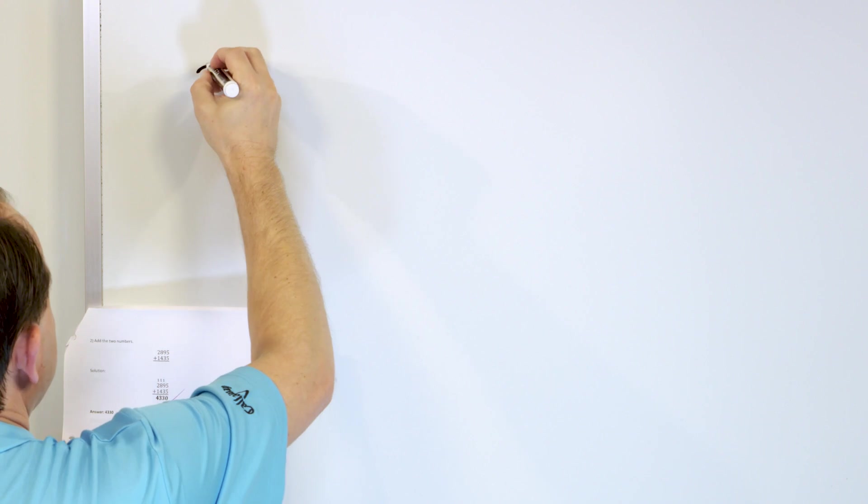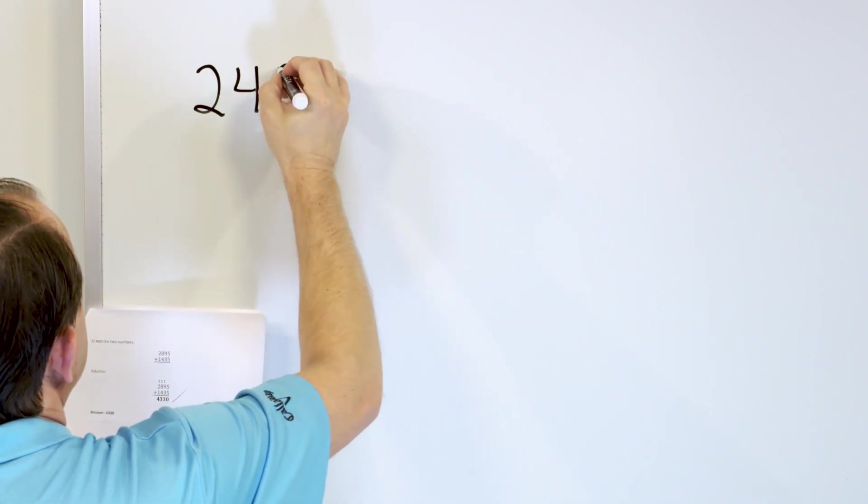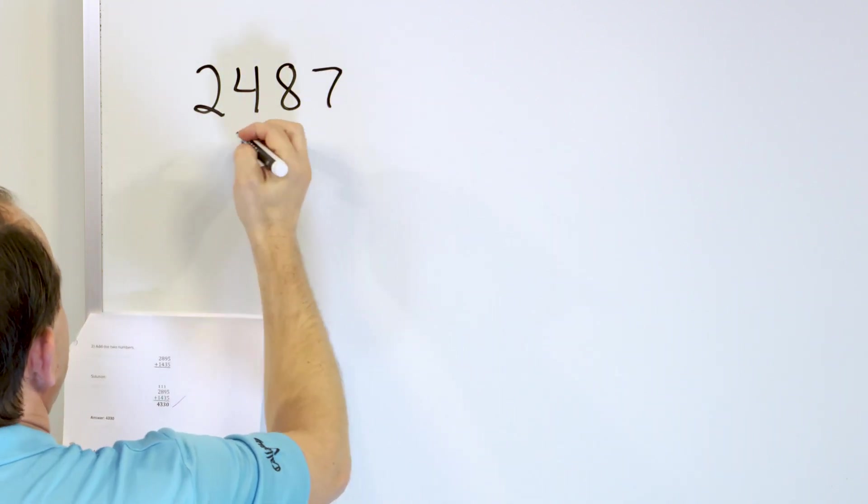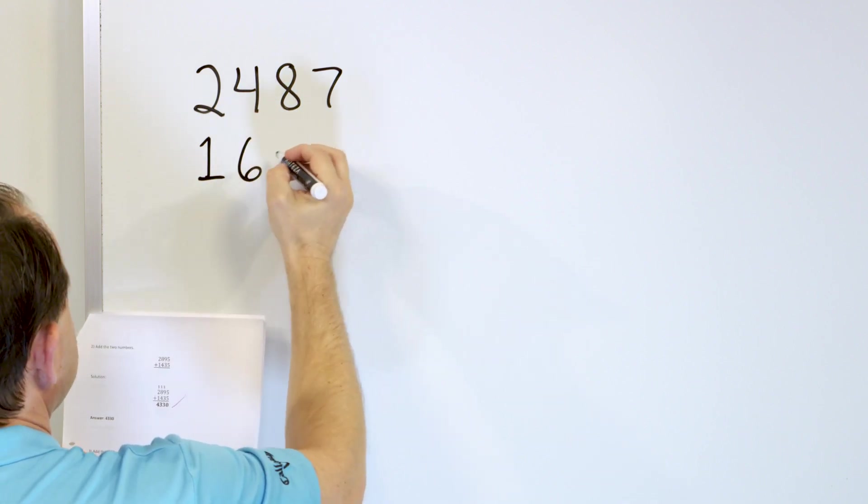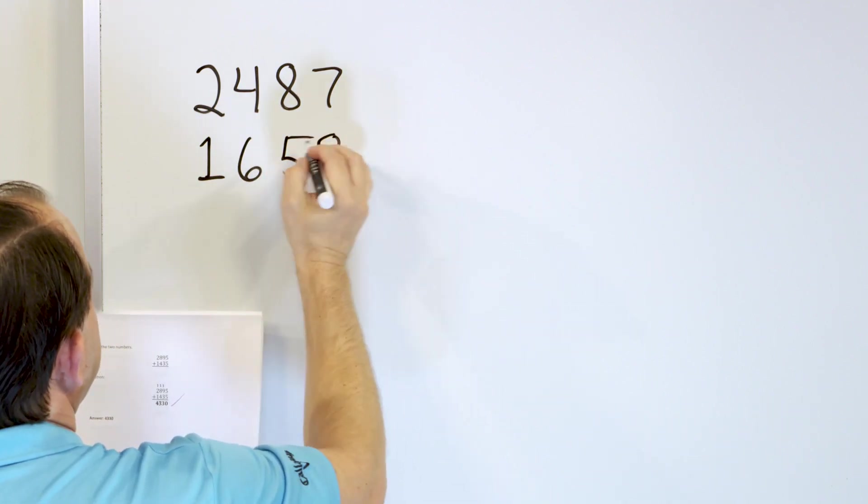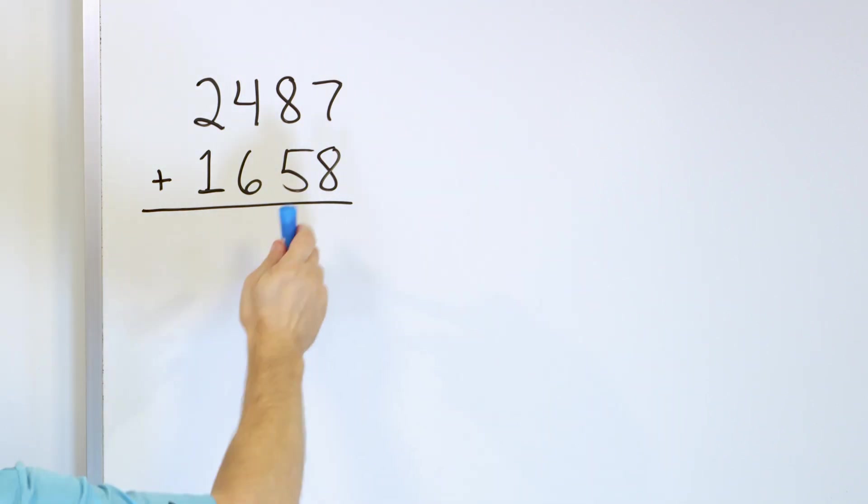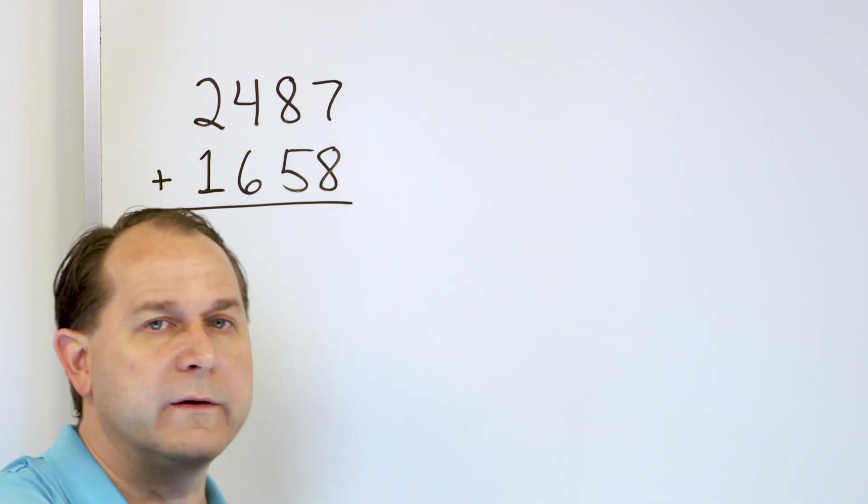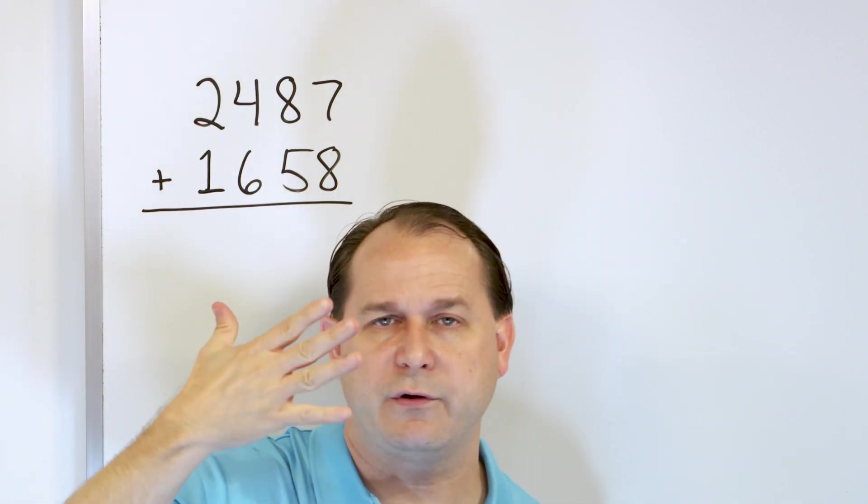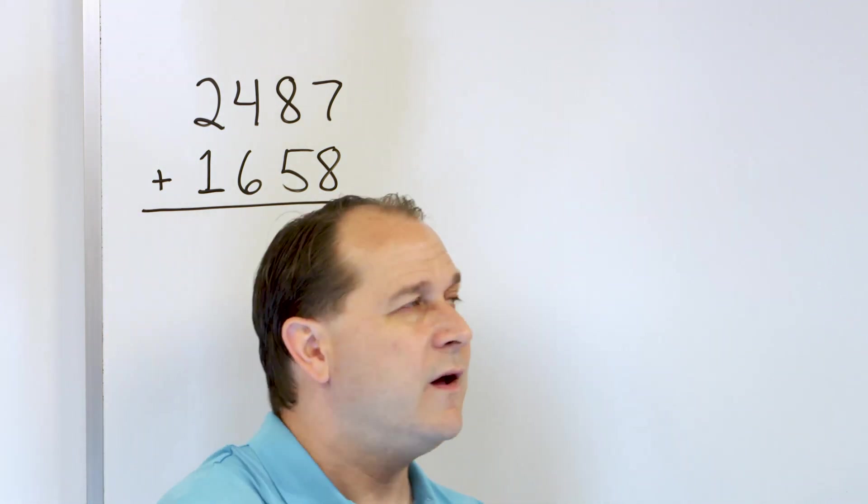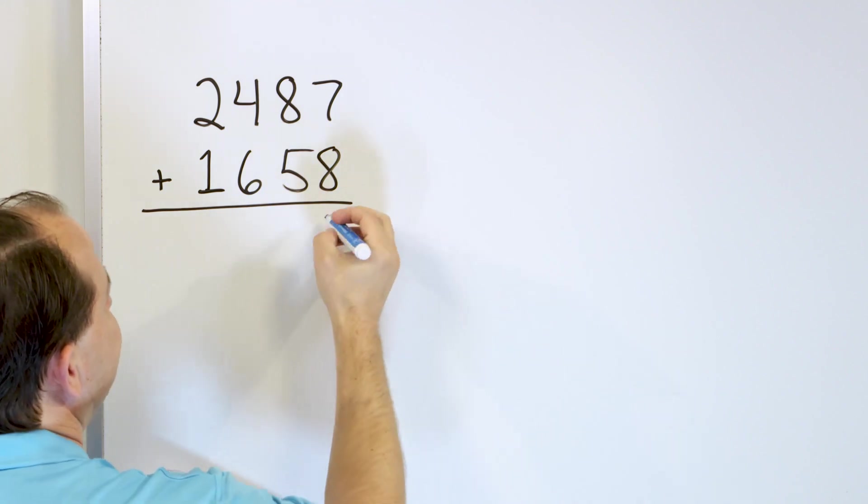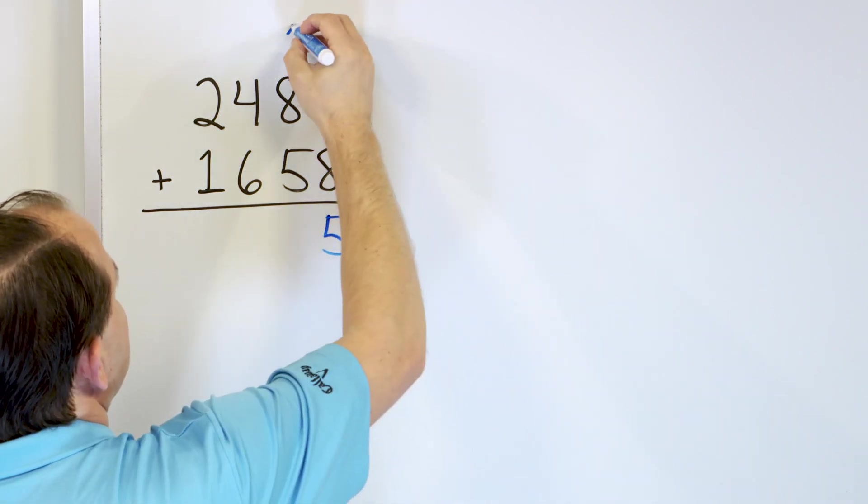Let's say you have 2,487. And we'll add to that 1,658. So we'll add these two numbers together. So here we have 8. Let's go up 7 more. That's 9, 10, 11, 12, 13, 14, 15. So that gives us 15. Of course, that's two digits, so we have to write the 5 here and carry the 1.